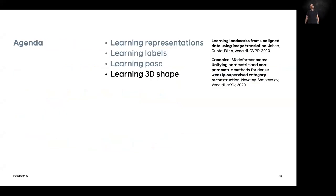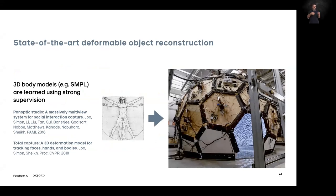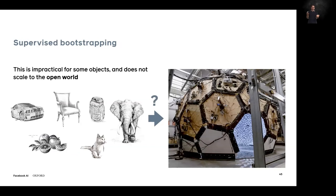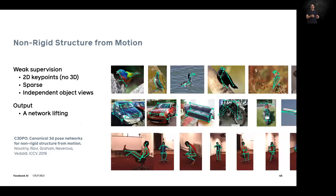Moving to 3D shape learning more broadly: SMPL-style models require specialized hardware (like a motion capture dome) and don't generalize — you can't put an elephant in such a machine. We need less supervised approaches. I consider non-rigid structure from motion (NRSfM): given 2D points labeled on images, we lift them to 3D across a category of deformable objects. We introduced C3DPO, a deep network for NRSfM that was state-of-the-art and remains very strong.